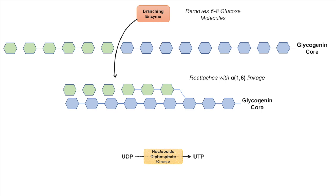The final thing to address is the UDP and UTP. UTP is used to activate glucose, and UDP is removed off of the UDP-glucose once the glucose is added to a glycogen chain. That UDP has to be recycled back to UTP, and it's done so by the enzyme nucleoside diphosphate kinase. This enzyme requires one ATP to reform UTP.